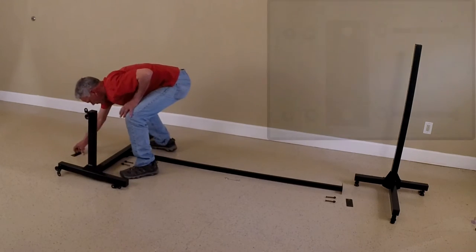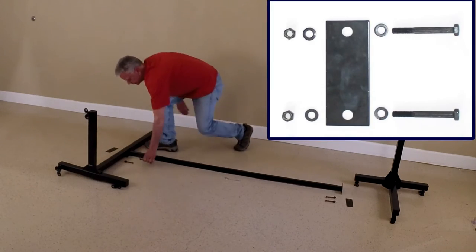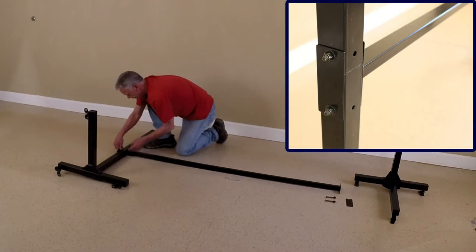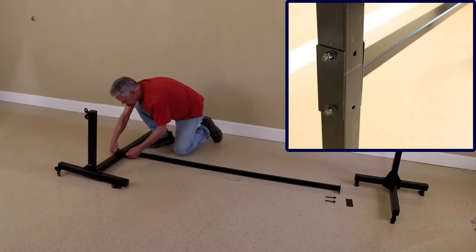Laying the tower on its back makes attaching the crossbar easy. Attach the crossbar so it straddles the joint between the upper post and the base post.